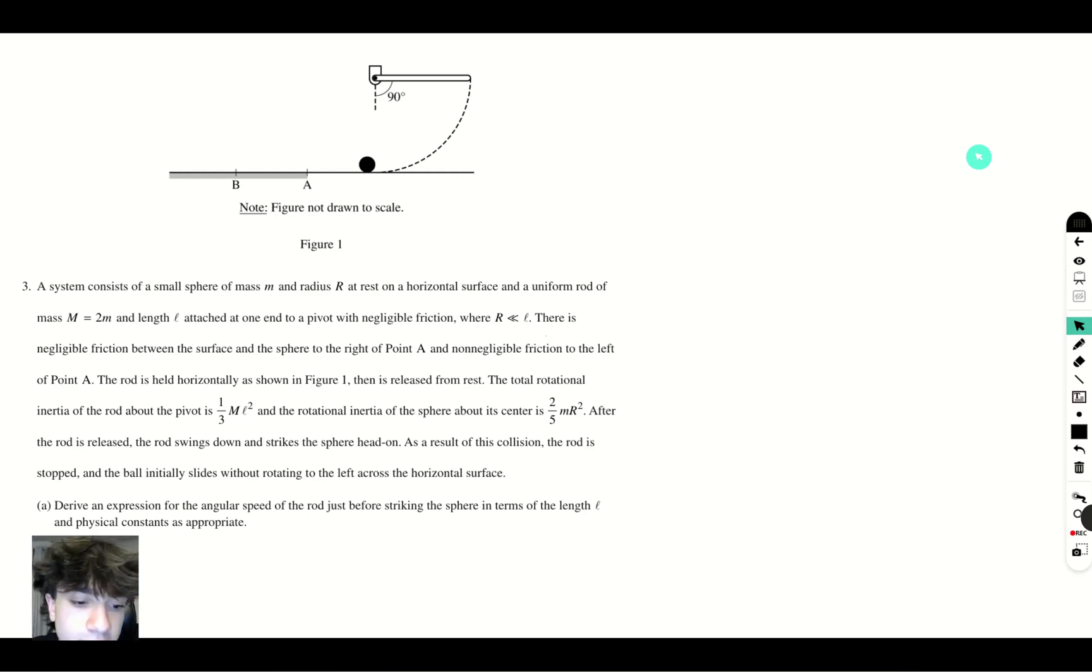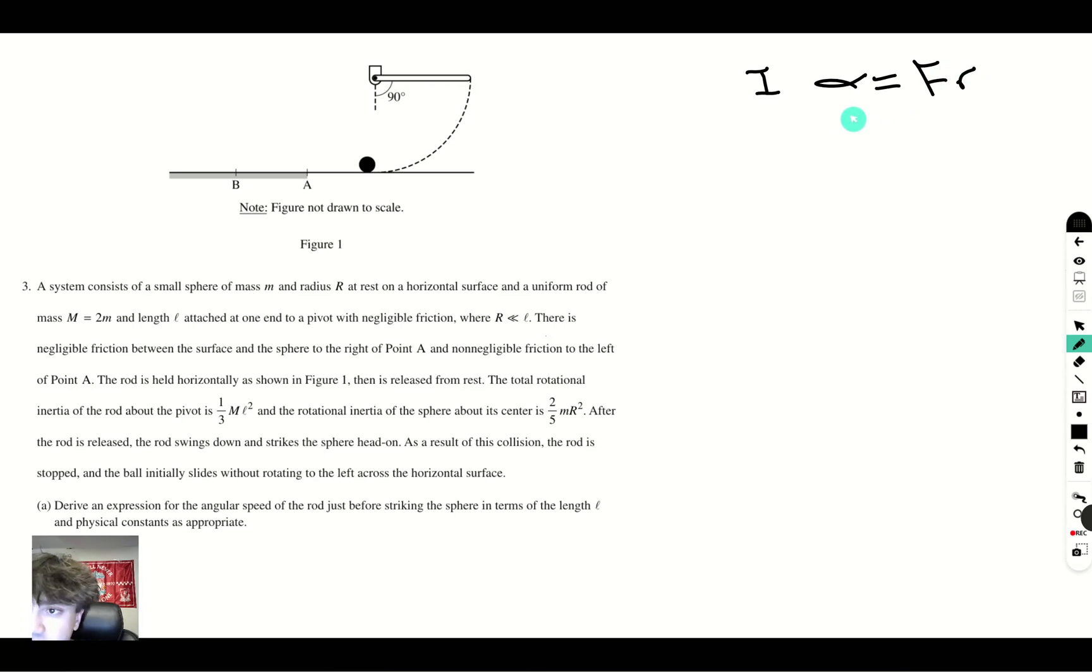Alright guys, so the way we're going to do this is by applying our knowledge on torque. So let's write out our torque equation. We know that our basic torque equation is I alpha equals force times radius. Now let's take a look at what our force is. That's going to be gravity, mg. Make sure to keep in mind that the mass of the rod is 2m, so 2mg.